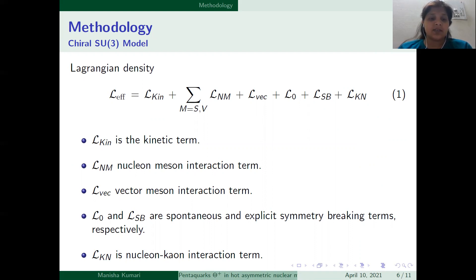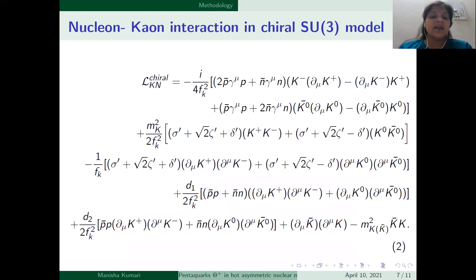Second is nucleon-meson interaction. Third is vector-meson interaction term. The terms L0 and LSB represent the spontaneous and explicit symmetry breaking terms. Last term is nucleon-kaon interaction term and it is given by this equation.